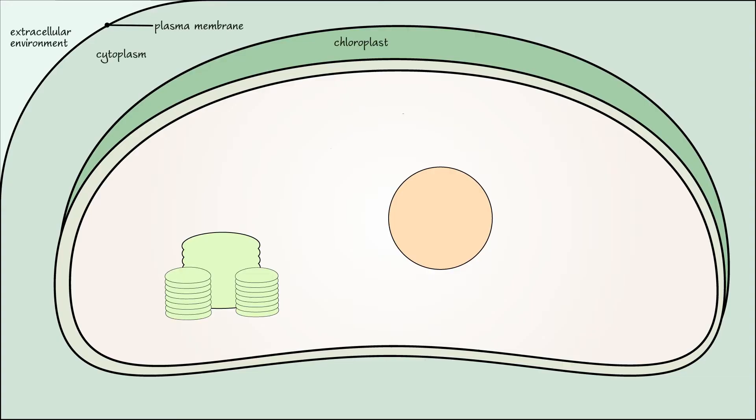Recall that the chloroplast has three membranes: the outer membrane, inner membrane, and thylakoid membrane. The compartments include the stroma and the thylakoid space.